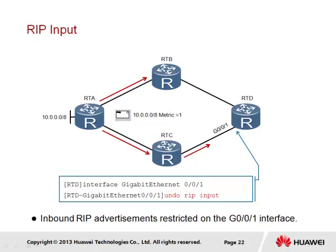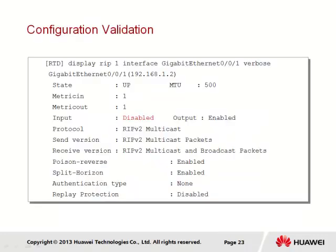Another command is the rip input command, used to manage how RIP routing information is handled by the receiving interface. The configuration involves the use of the undo rip input command on the Gigabit Ethernet 0/0/1 interface of RTD. Through this command, all received RIP messages via this interface will be ignored and discarded. This prevents the interface from taking part in the RIP process, and may even be used to restrict an entire router from participating in RIP. The same display command can be applied to RTD to view the RIP status of each interface, showing that inbound RIP messages are discarded as a result of the disabled state of the input field.